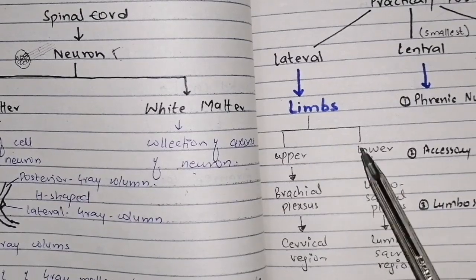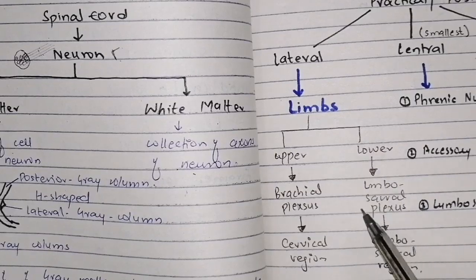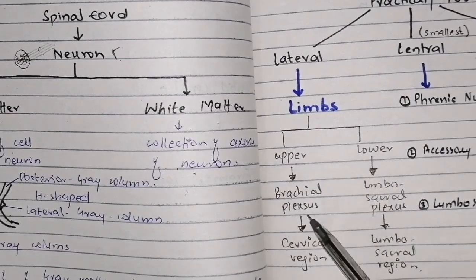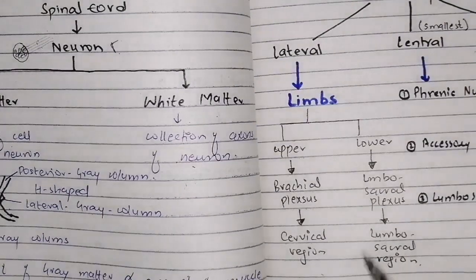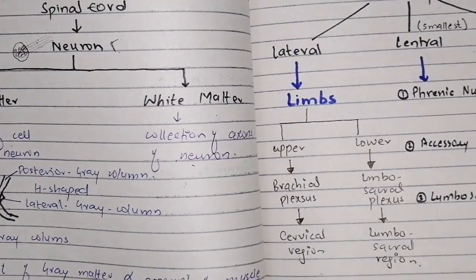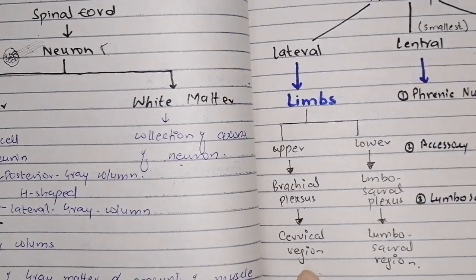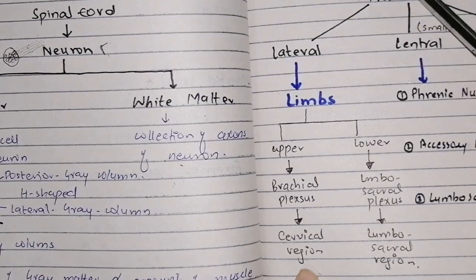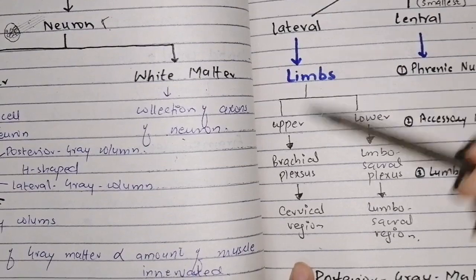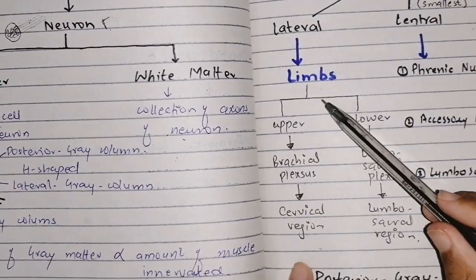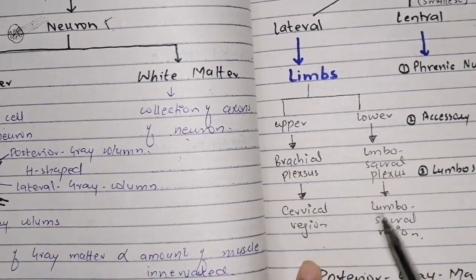The limbs are supplied by either the brachial plexus or the lumbosacral plexus. The brachial plexus arises from the cervical region, and the lumbosacral plexus arises from the lumbosacral region. So the lateral group of anterior gray matter is only present in the cervical and lumbosacral regions.